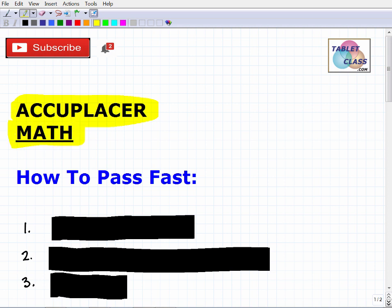There are three ACCUPLACER exams because the ACCUPLACER changed in 2019 to the next-generation ACCUPLACER. Basically, you'll have a basic one, medium-level mathematics, and then more advanced.